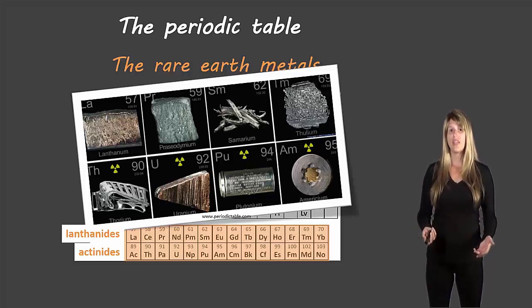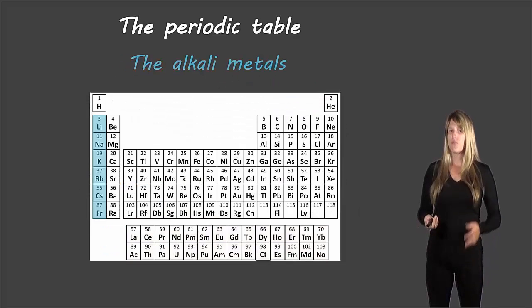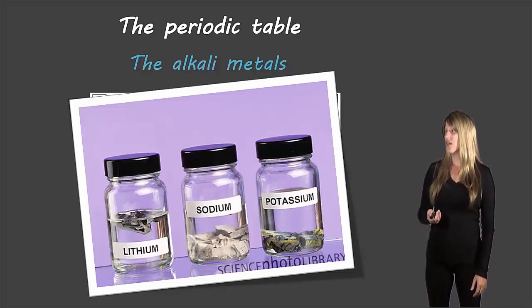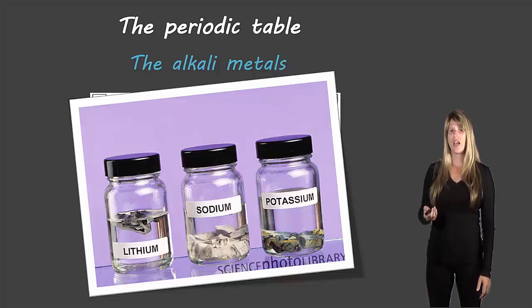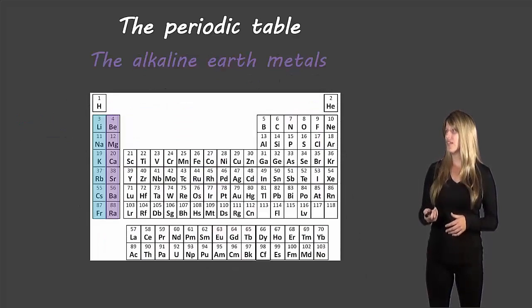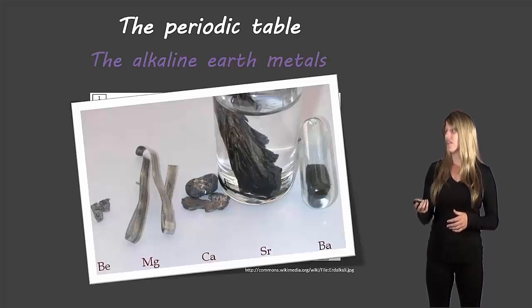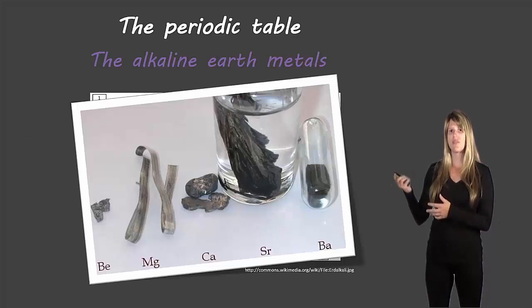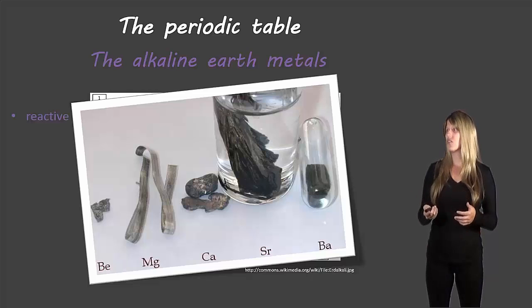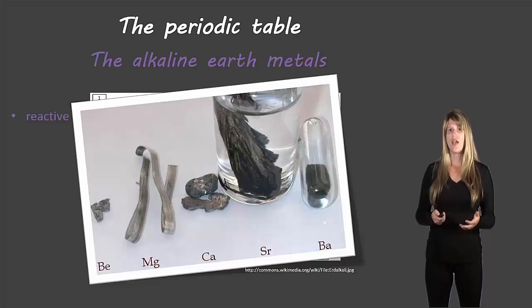When we start looking at the different families, the first one on the left there is the alkali metals. You can see pictures here of different alkali metals. They're all kept in special oil so that they don't react, because these are very reactive metals. The next are the alkaline earth metals next door. These ones have different characteristics - some of them are kept under oil as well, some of them are not. These are not as reactive as the alkali metals, but they're still considered to be quite reactive.